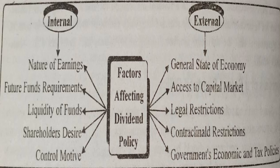Next is contractual restrictions. Generally, certain lenders to the company also impose restrictions regarding payment of dividend for the safety of their loans. Sometimes restrictions are imposed such that dividend shall not be declared if the debt-equity ratio is found less than 1.5:1, or the liquidity ratio is less than 2:1. When such restrictions are imposed, dividend is paid at a lower rate by retaining a larger portion of profit.